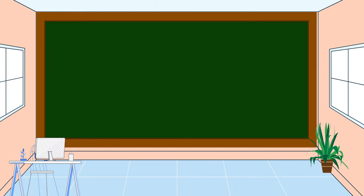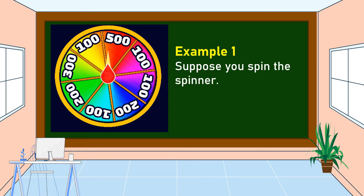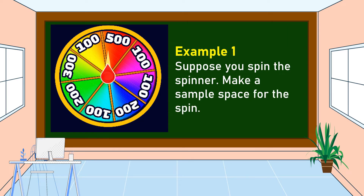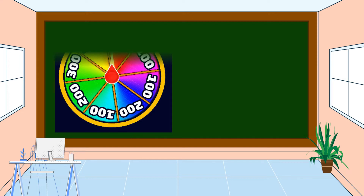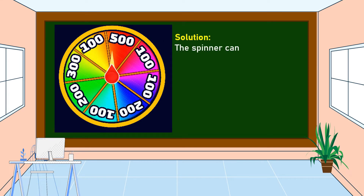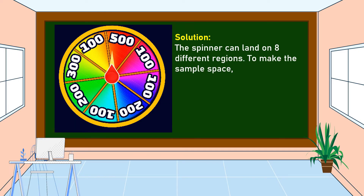To understand our lesson, let's study some examples. This is our example number one. Suppose you spin the spinner. Make a sample space for the spin. The spinner can land on eight different regions. To make the sample space, list all the possible outcomes of the spin.